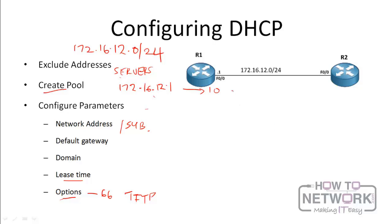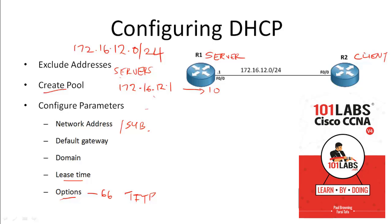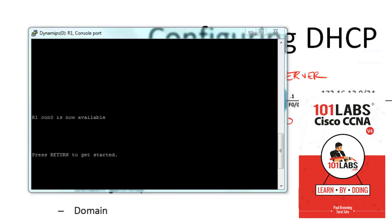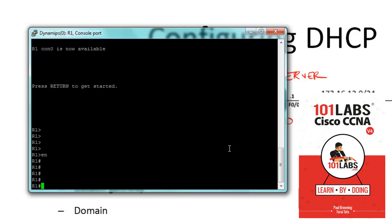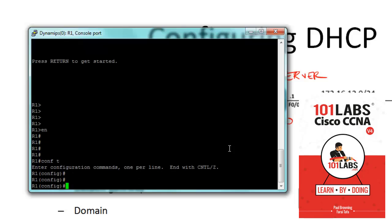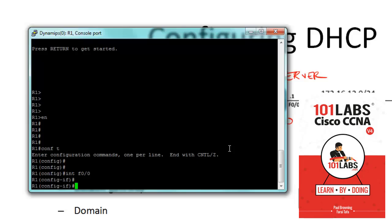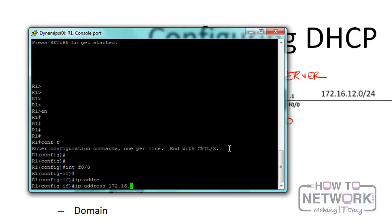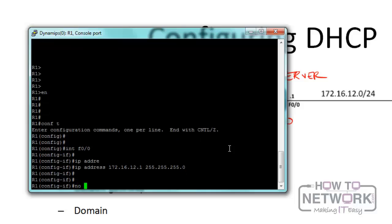Now let's look at an example. We have two routers - Router 1, which will be the DHCP server, and Router 2 configured as a client. We're going to configure Router 1 as a DHCP server for network 172.16.12.0/24, then configure Router 2 to get an address from Router 1. On Router 1, we go into config mode, configure its FastEthernet 0/0 interface with IP address 172.16.12.1 255.255.255.0, and bring up the interface with no shutdown.